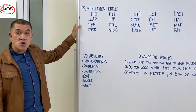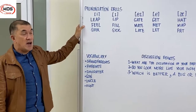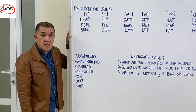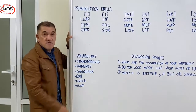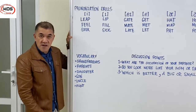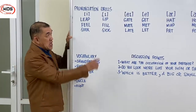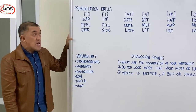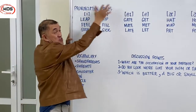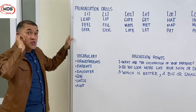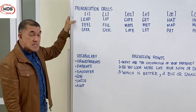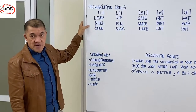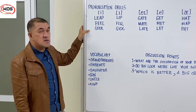Next, we have the short I sounds. First word: lip, lip, lip. Next word: fill, fill, fill. Next word: sick, sick, sick. Now I'm going to read these words so you can listen for the differences — leap, lip, feel, fill, seek, sick.